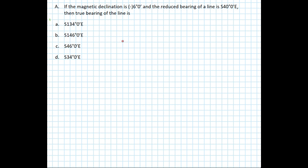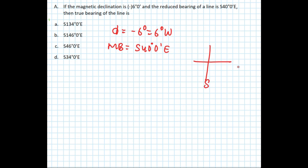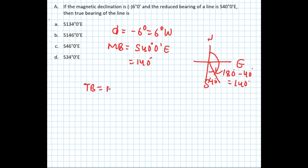Next question: if the magnetic declination is minus 6 degrees (that is 6 degrees west) and the reduced bearing of a line is south 40 degrees 0 minutes east, find the true bearing. The magnetic bearing is south 40 degrees east, which lies in the south-east quadrant. To find the whole circle bearing, we subtract from 180 degrees: 180 minus 40 equals 140 degrees. True bearing equals magnetic bearing minus declination since it's west, so 140 minus 6 degrees equals 134 degrees.